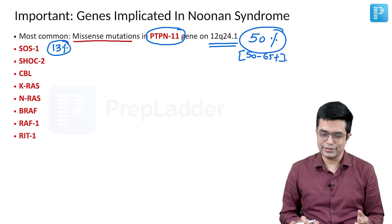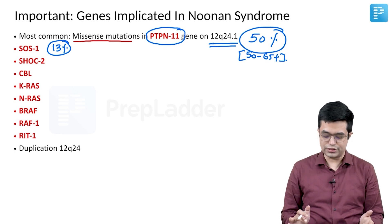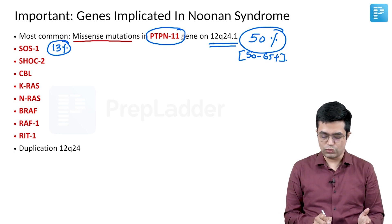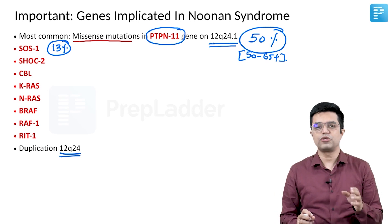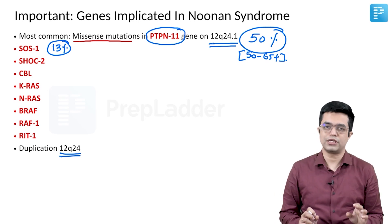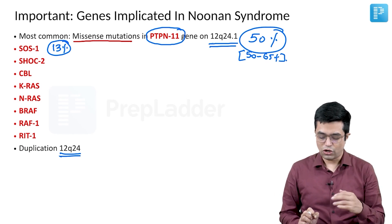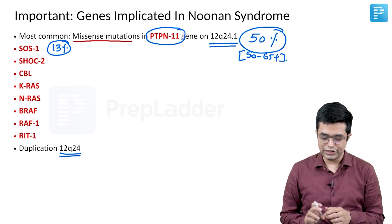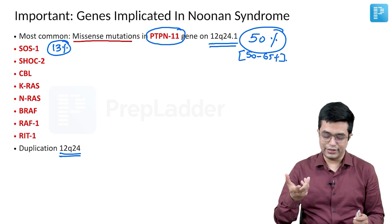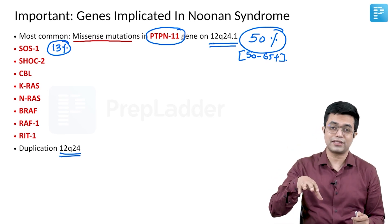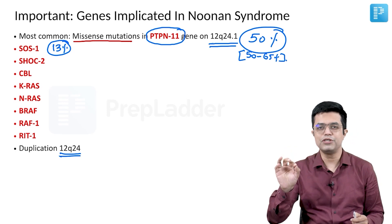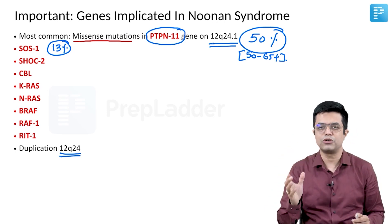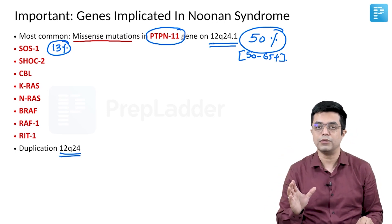Nelson also states that duplications involving the 12q24 region, particularly 12q24.1, can produce features of Noonan syndrome. Importantly, any one of these individual gene mutations alone can produce Noonan syndrome — it is not a combination of mutations that is required.